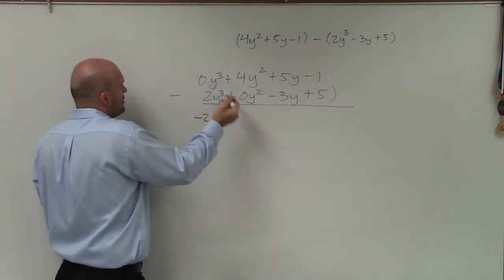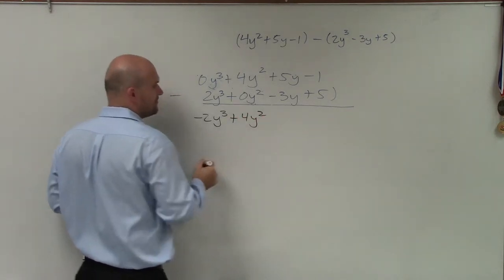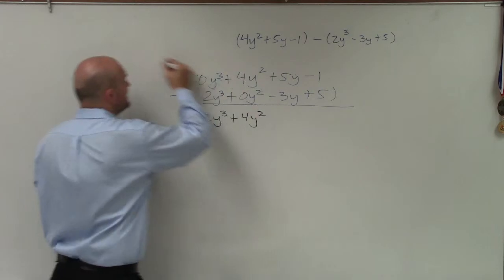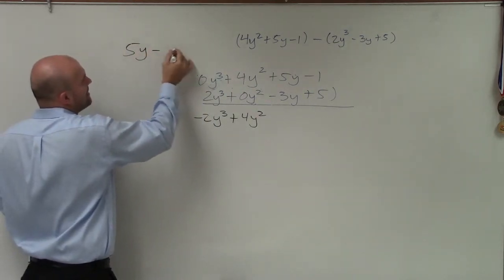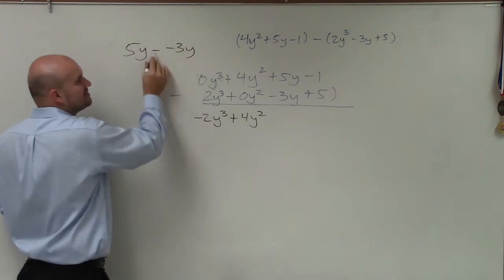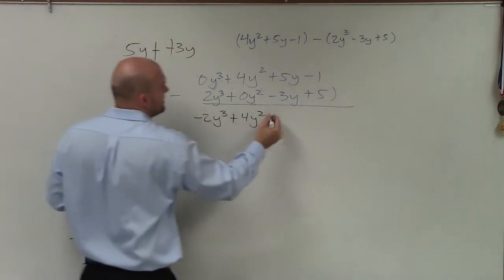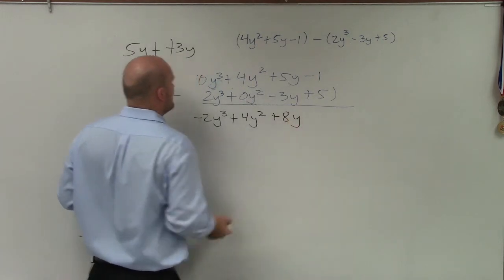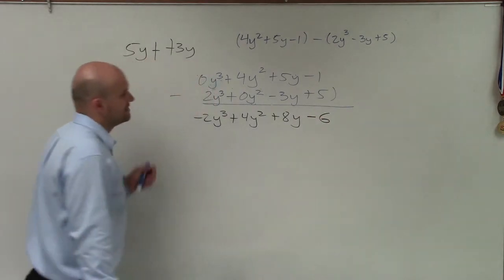4 minus 0, that's just going to be 4y². 5y minus a negative - if we have trouble, I'll write this out: 5y minus negative 3y. You can see that's a double negative, right? So it turns into a positive, which would be 8y. And I have -1 minus 5, which would be -6.